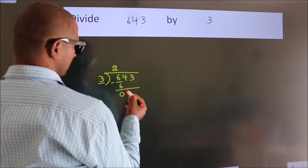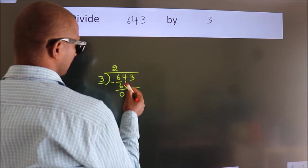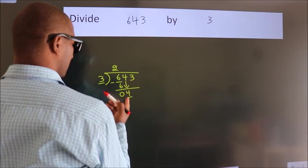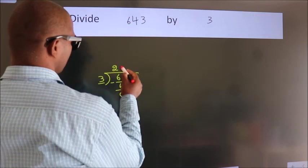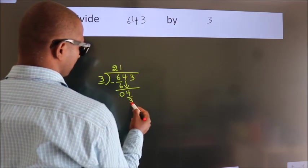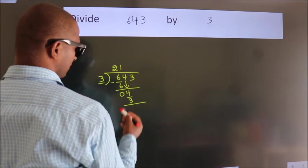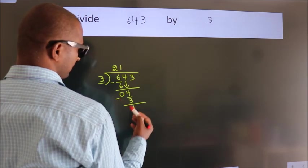After this, bring down the beside number. So, 4 down. A number close to 4 in the 3 table is 3 times 1, which is 3. Now we subtract and get 1.